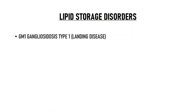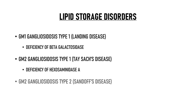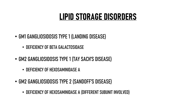The various lipid storage disorders where cherry red spot can be seen are: GM1 gangliosidosis type 1, also known as Landing disease, caused by deficiency of beta-galactosidase enzyme leading to accumulation of sphingolipids in the nervous system including retinal ganglion cells. GM2 gangliosidosis type 1, also known as Tay-Sachs disease, occurs due to deficiency of hexosaminidase A enzyme. GM2 gangliosidosis type 2, also known as Sandhoff's disease, is also caused by deficiency of hexosaminidase A, but a different subtype of the enzyme is involved.